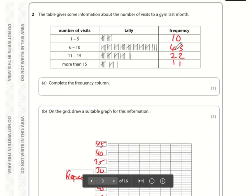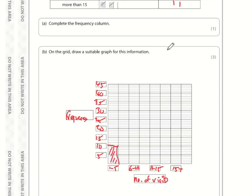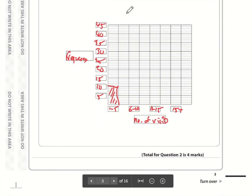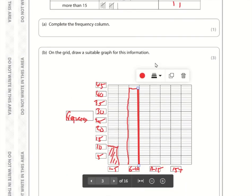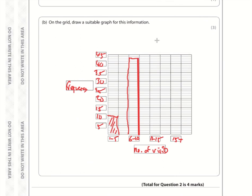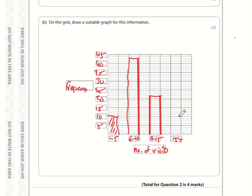What I would do here is draw a bar chart. For the first 1 to 5, it goes up to 10. 6 to 10 was 43, so here's 40, 43 is 2 below the 45. The 11 to 15 was 22, so there's 20, 21, 22. And 15 plus was 11. There's 10, so there is 11. And that's perfectly acceptable.